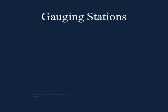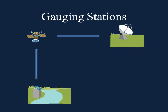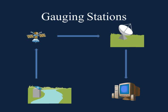Gauging stations transmit data either in 15-minute or 60-minute increments. In its simplest form, the stream data are recorded by the gauging station and then sent to a satellite, which then sends data to a ground station. Finally, the National Water Information System displays it on the USGS website.